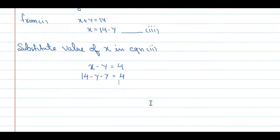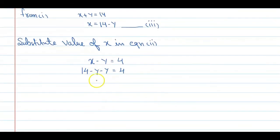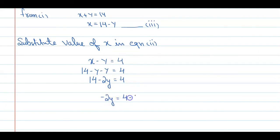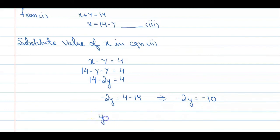यहाँ से हम reduce करके y की value निकालेंगे. So from here we can say 14 minus 2y equal to 4. अब y की value निकालेंगे, y को एक तरफ अकेला छोड़ेंगे. So minus 2y is equal to 4 minus 14, that gives us minus 2y equal to minus 10. So y is equal to minus 10 upon minus 2, which gives value 5. This is the value of y.